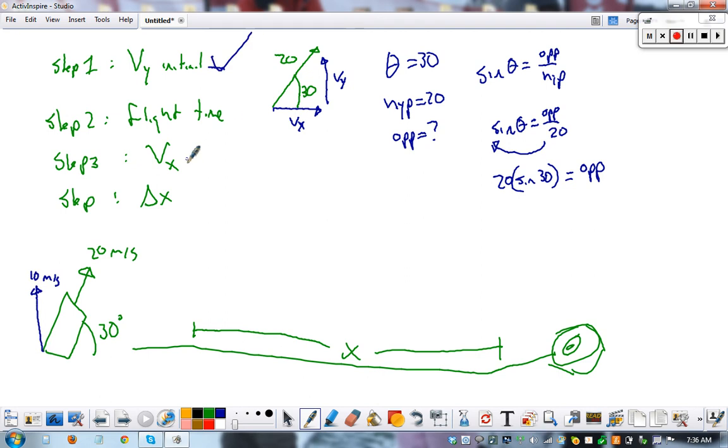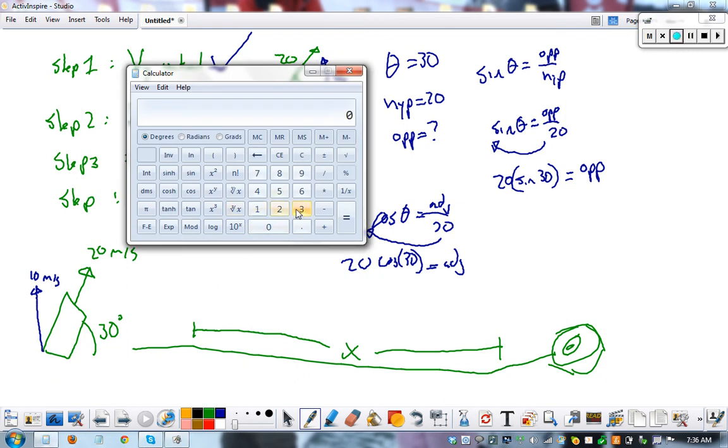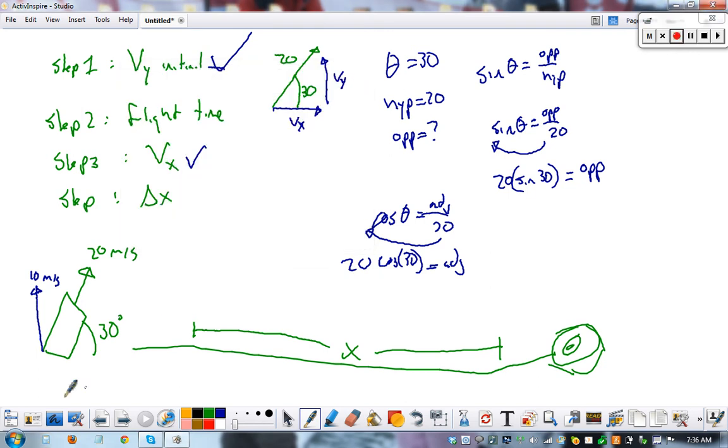We can do the same thing now for solving for x. Only it's going to be cosine angle equals adjacent over 20. So cosine 30, move the 20 over here, equals the adjacent side. 30, cosine, times 20, 17.3. So I know this much is 17.3.